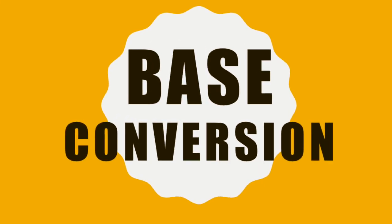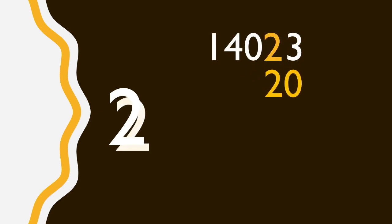A place value system means that the position of a symbol can change its value. So the 2 in 14,023 has a different value to the 2 in 24,319.